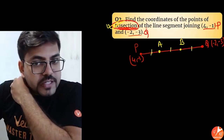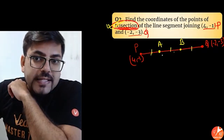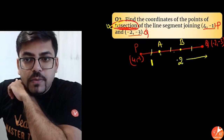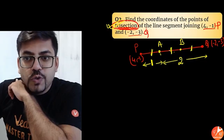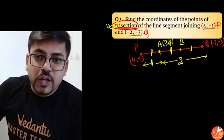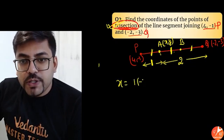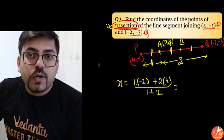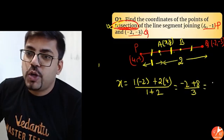We have got this first part, second part, and third part. We have to find the coordinates of A and B. Point A is dividing PQ in the ratio 1 is to 2, because only one equal part is on this side and two equal parts are on the other side. So for X: M·X2 plus N·X1 divided by M plus N, that is 1 into minus 2 plus 2 into 4 divided by 1 plus 2. So minus 2 plus 8 divided by 3 equals 6 by 3, which is 2.